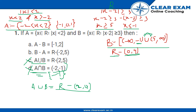Now let's check B minus A. In B, we have all real numbers minus those from 0 to 4, and in A we have minus 1, 0, and 1. So B minus A would include all real numbers except those from minus 2 to 5. So this is correct.